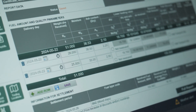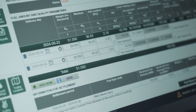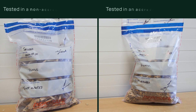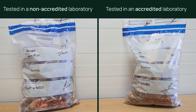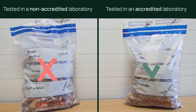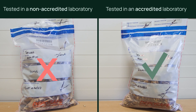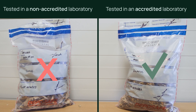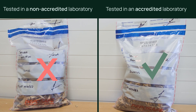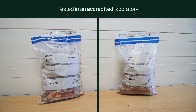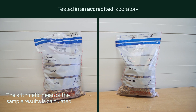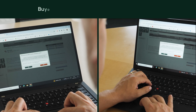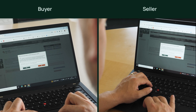If the results of testing of the main sample and the reserve sample do not coincide, priority is given to the sample that was tested in an accredited laboratory. An additional sample may also be used. If both samples were tested in an accredited laboratory, the arithmetic mean is calculated. Sampling results must be approved by both parties.